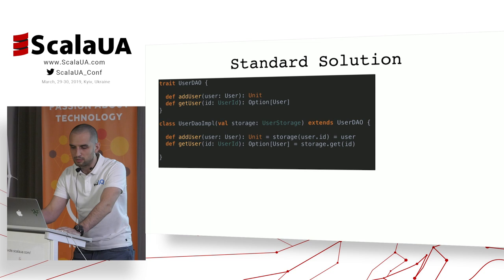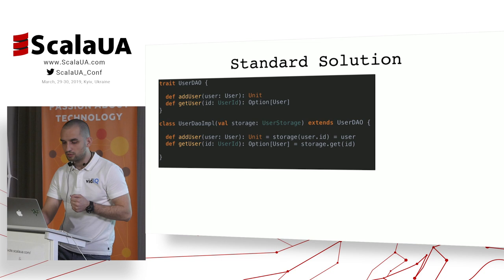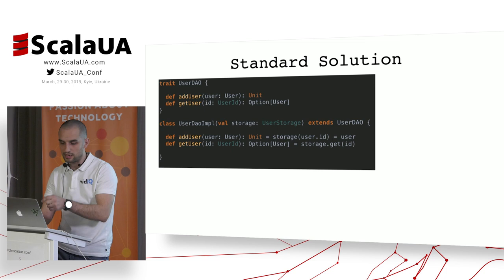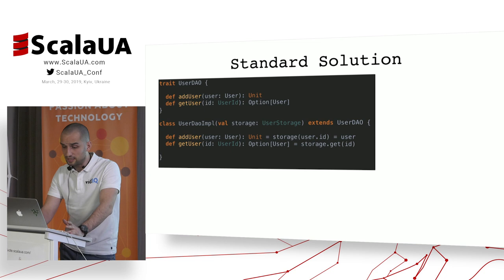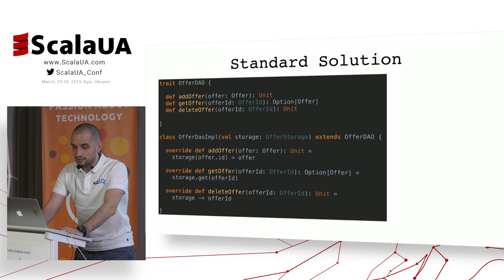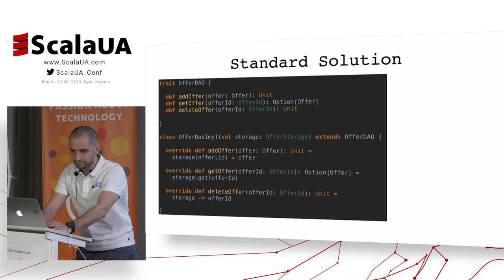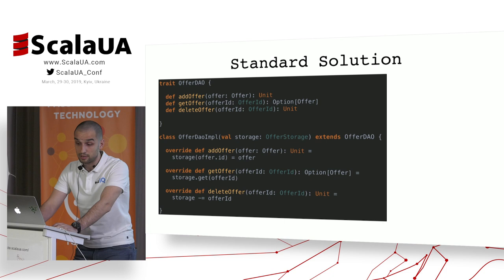In the implementation, we add real logic to each method. For add user, we put the key and associate the appropriate user entity with it. For get user, we get the entity from the map by its ID — returning it wrapped in Some, or None otherwise. The same pattern applies to the offer entity: the same code for the offer DAO interface, and then implemented similarly by operating with mutable map entries.